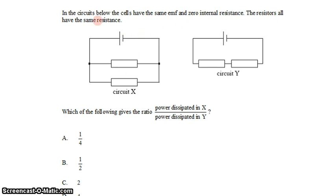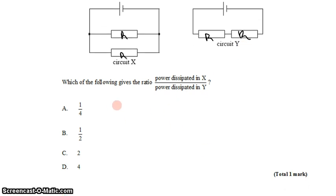The resistors all have the same resistance, so let's call them all R. We want to know what's the ratio between the power dissipated in circuit X and the power dissipated in circuit Y. So we want power in X divided by power in Y.